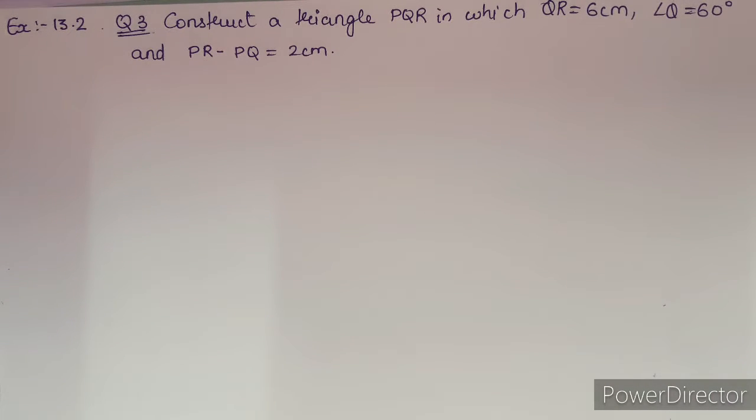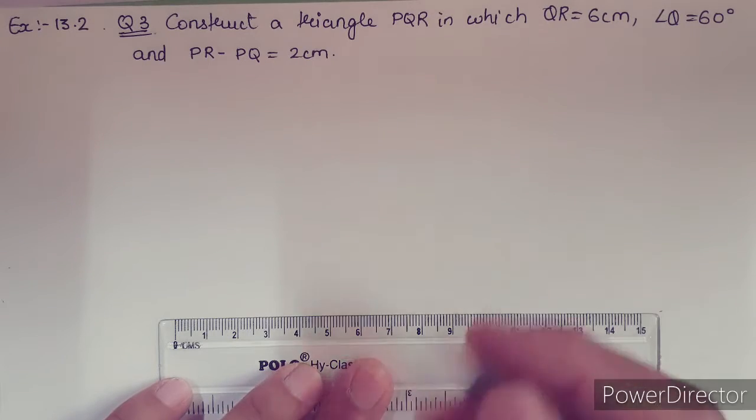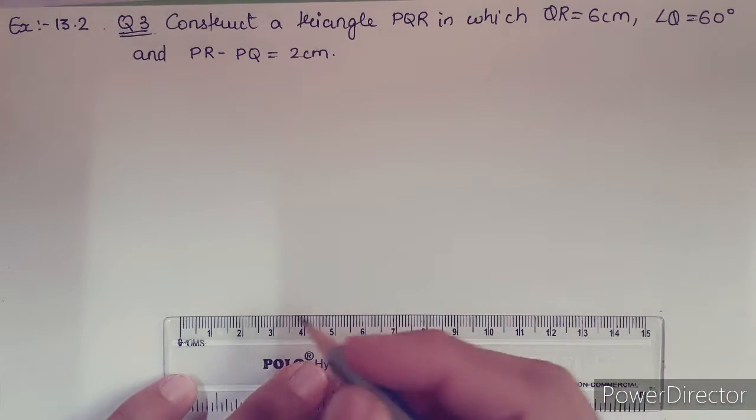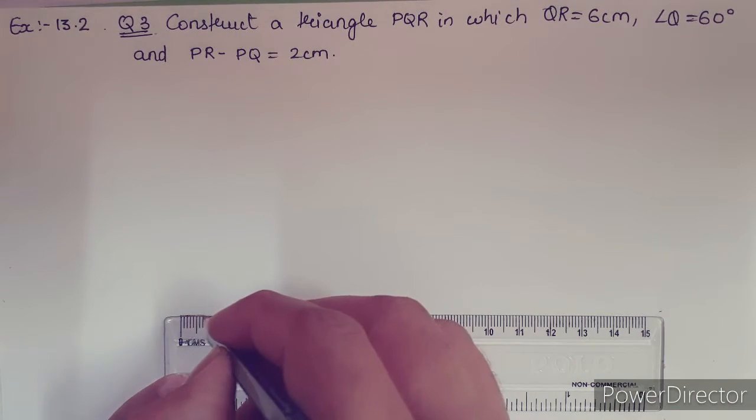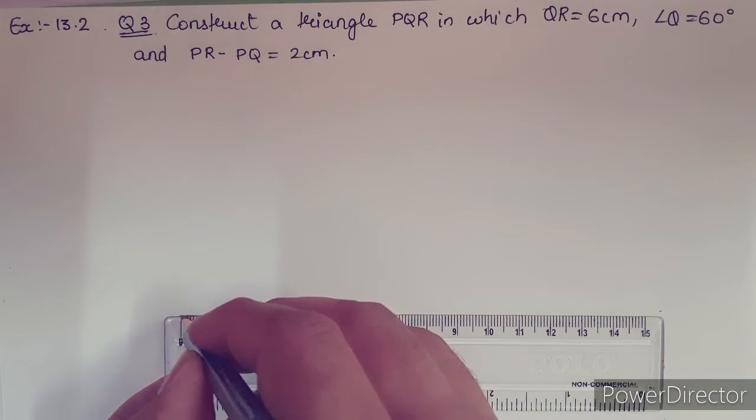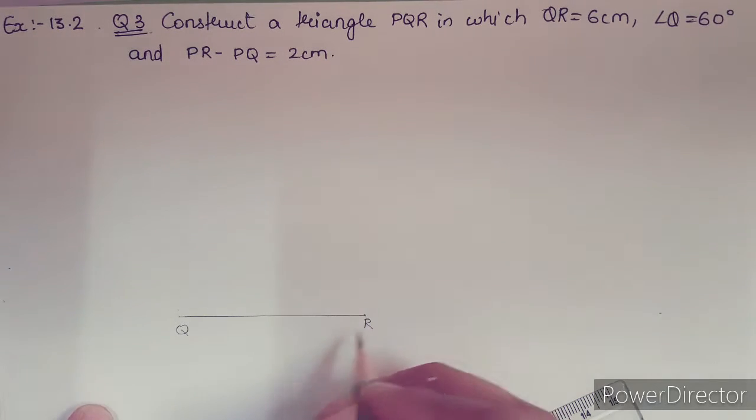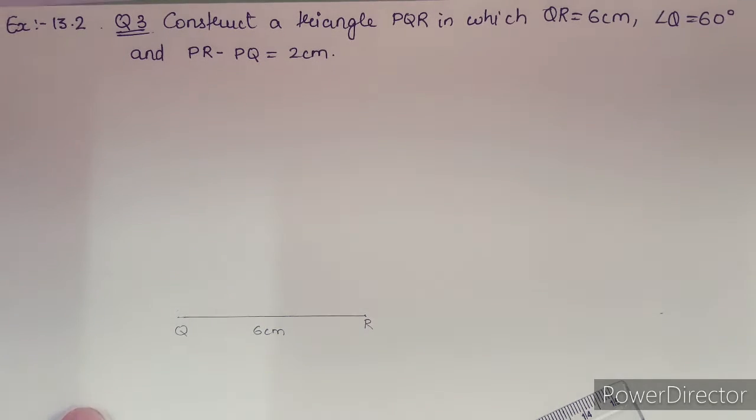We will start with QR equals 6 cm. So let us draw a line segment. This is QR and this is 6 cm.